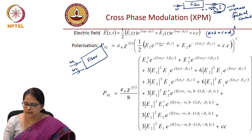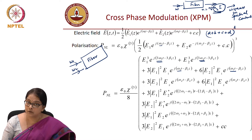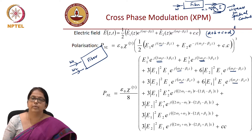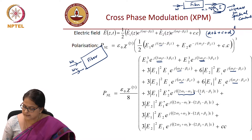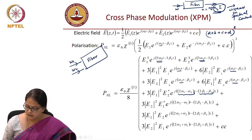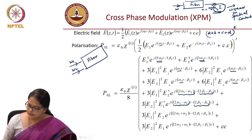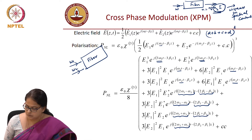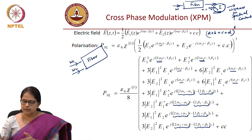From the expansion, you will definitely get a term at 3ω₁ (a cube term) and also a term at 3ω₂. There are two non-linear contributions to ω₁ and two non-linear contributions to ω₂. There is a contribution at frequency 2ω₁ − ω₂ with corresponding phase 2β₁ − β₂, and a contribution at 2ω₂ − ω₁ with phase 2β₂ − β₁. Then there is a 2ω₁ + ω₂ and 2ω₂ + ω₁ with corresponding phases 2β₁ + β₂ and 2β₂ + β₁, plus the complex conjugate of all of this.